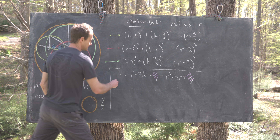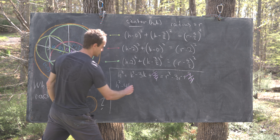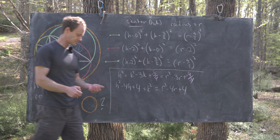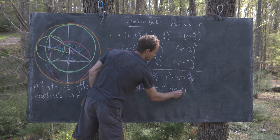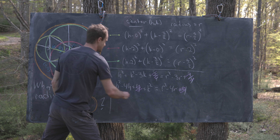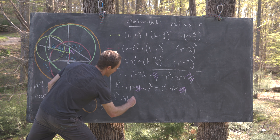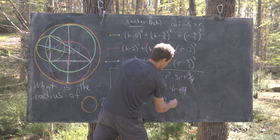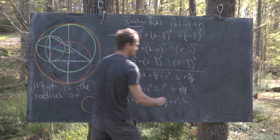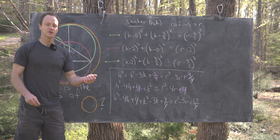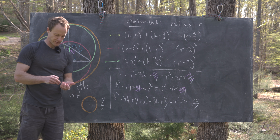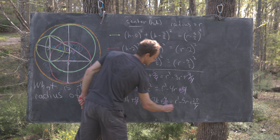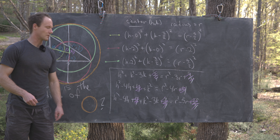Expanding the three equations and collecting terms, the constant terms cancel nicely. In the third equation, 4 + 9/4 = 16/4 + 9/4 = 25/4, which cancels with the 25/4 on the right — a direct consequence of the 3-4-5 right triangle. This leaves a cleaner, more manageable system of three equations.